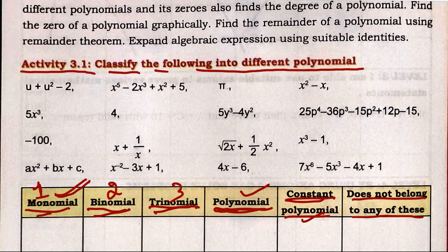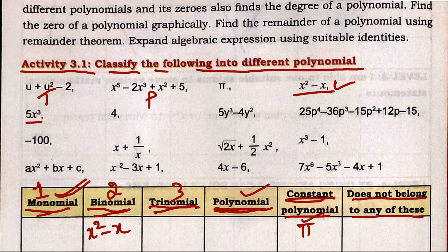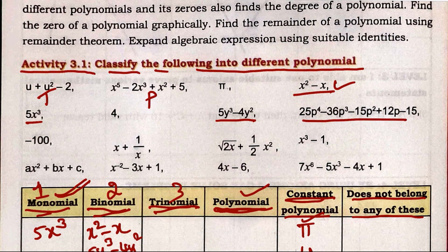Looking at the expressions in Activity 3.1: the first one is a trinomial, the next is a polynomial, then we have pi — which we write here as a constant. Next is a binomial, then a monomial (x cubed), then the number 4 which is a constant. The expression 5y cubed minus 4y squared is a binomial.